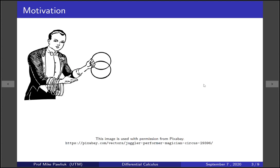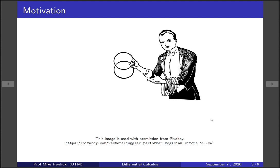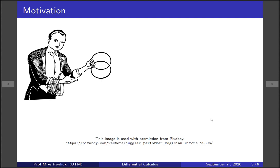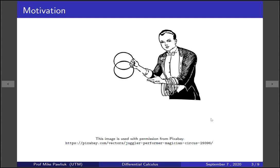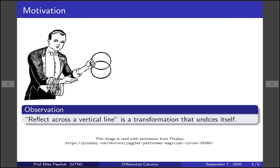Let's start with some motivation. Here's a picture of an amazing magician, and let's imagine that we have a button that reflects this whole picture. There's an example—it just reflected the whole thing and changed the orientation. Now what happens if we press this reflect button again? If you reflect it again, it goes back to the starting image.